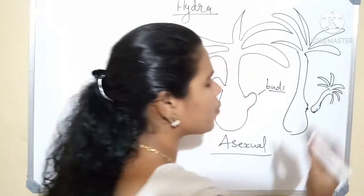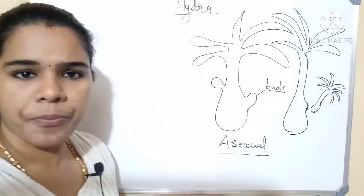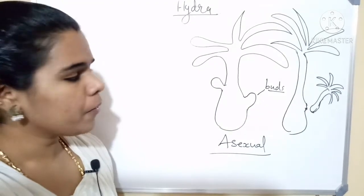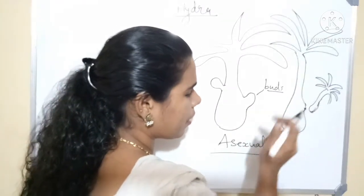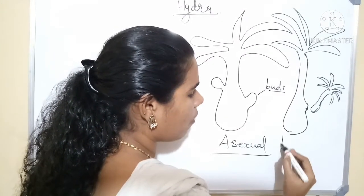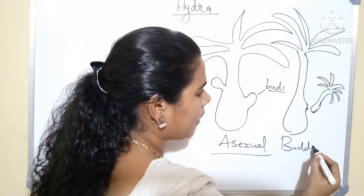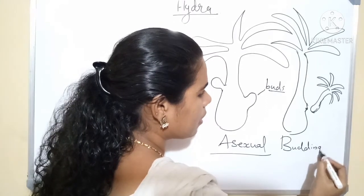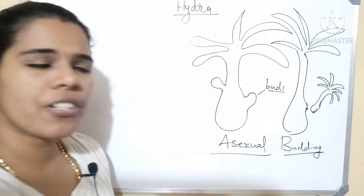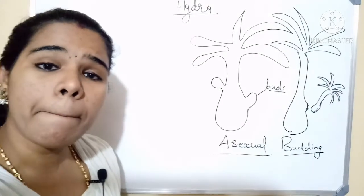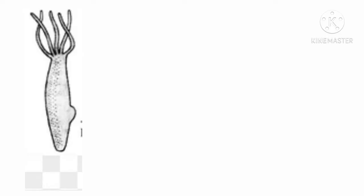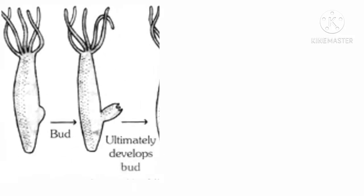It will leave an individual Hydra. This kind of reproduction is called budding. Let us see how asexual reproduction occurs in Hydra.